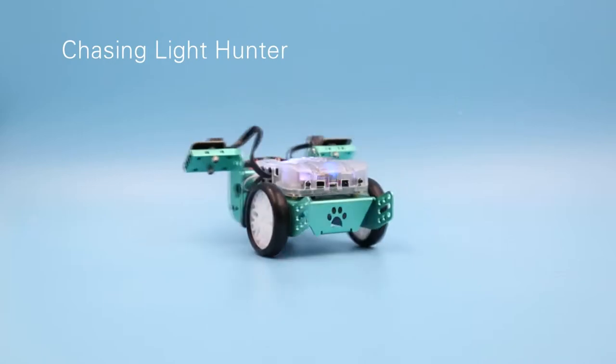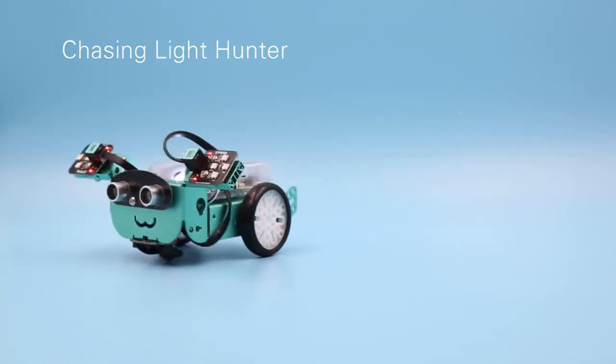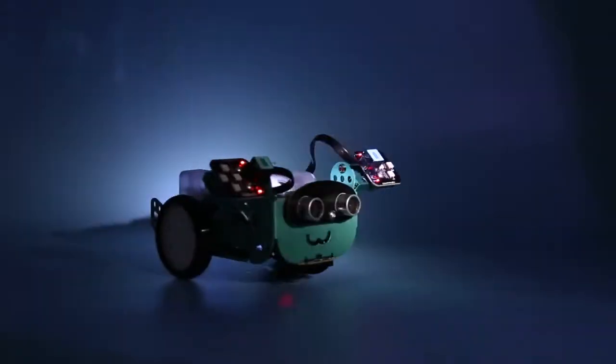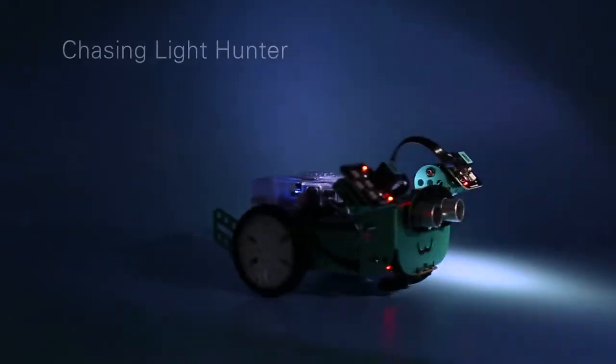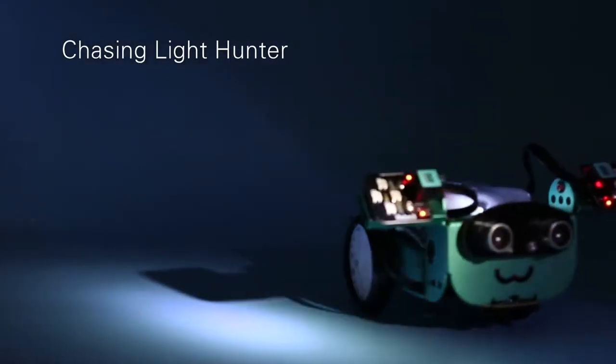With a grayscale sensor, you can turn the Mio into a light hunter, which automatically detects the intensity of light and tracks the brightest light as it moves.